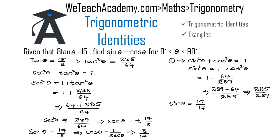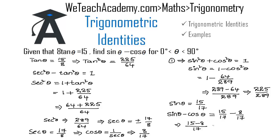Now let us find the value of sine theta minus cos theta. Substituting the values of both sine theta and cos theta, that is 15 by 17 minus 8 by 17. With a common denominator of 17, the numerator is 15 minus 8. So the result is 7 by 17, which is the value of sine theta minus cos theta.